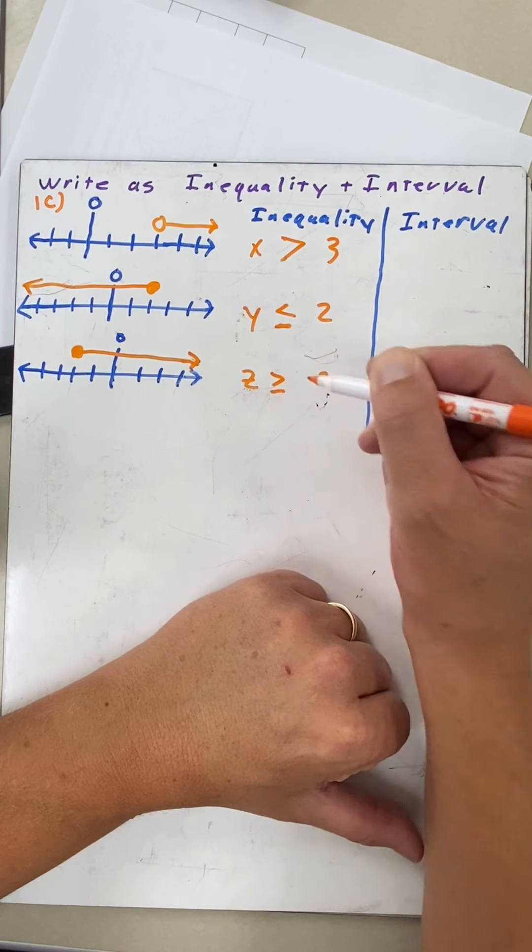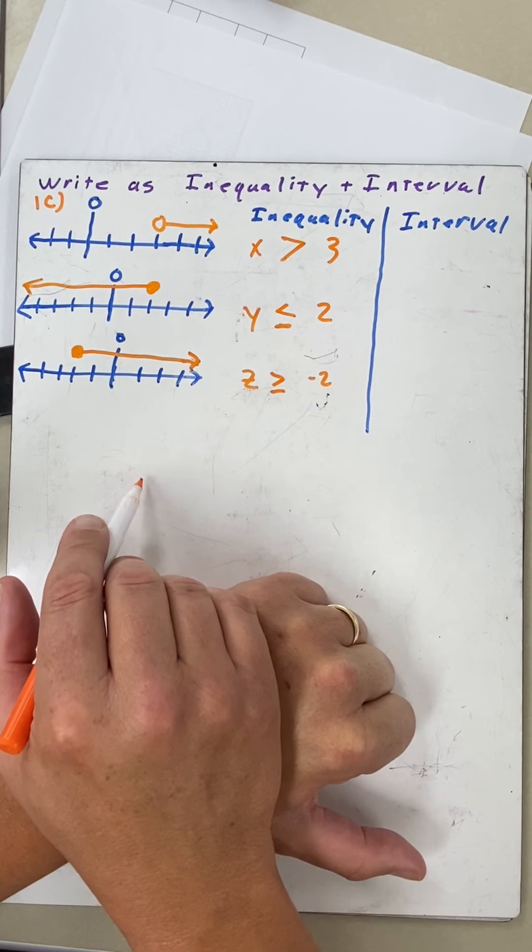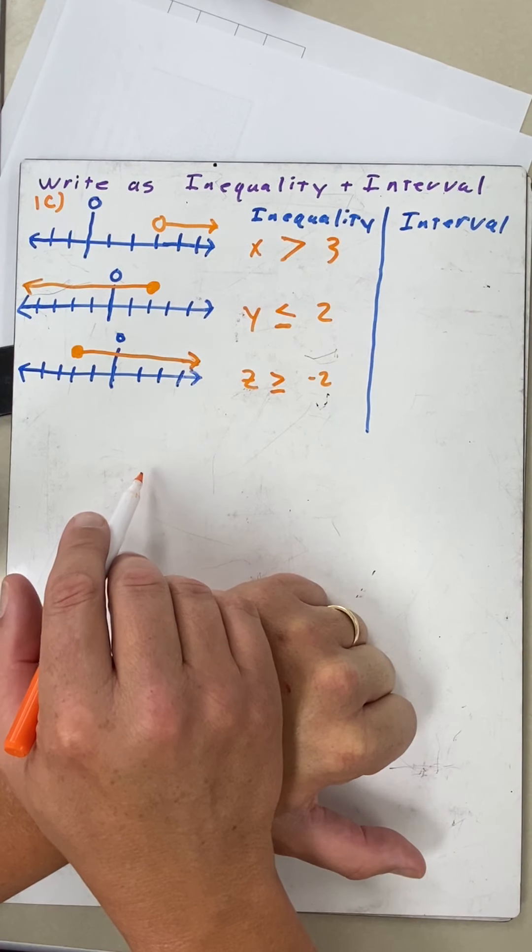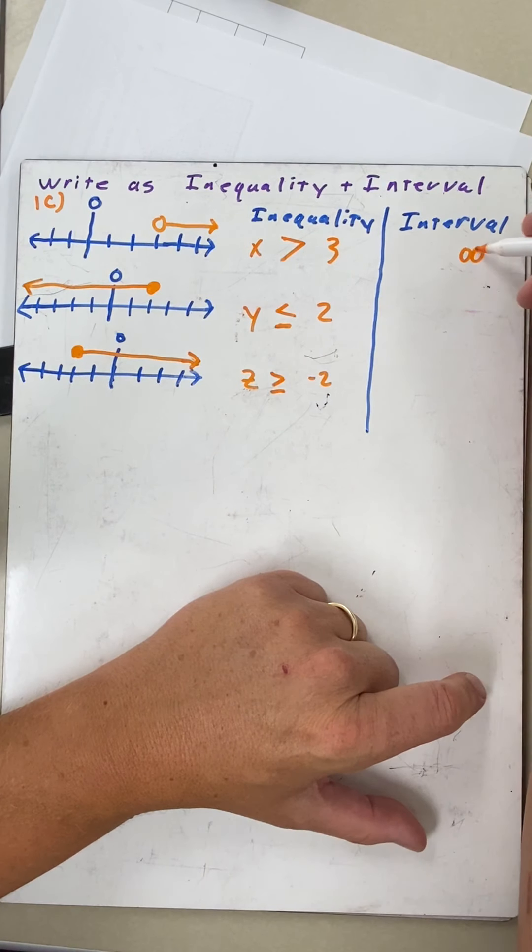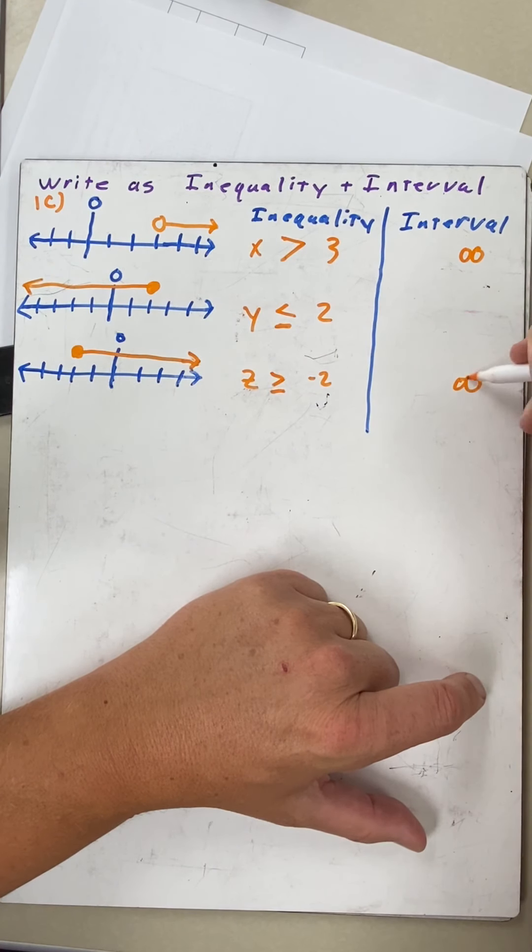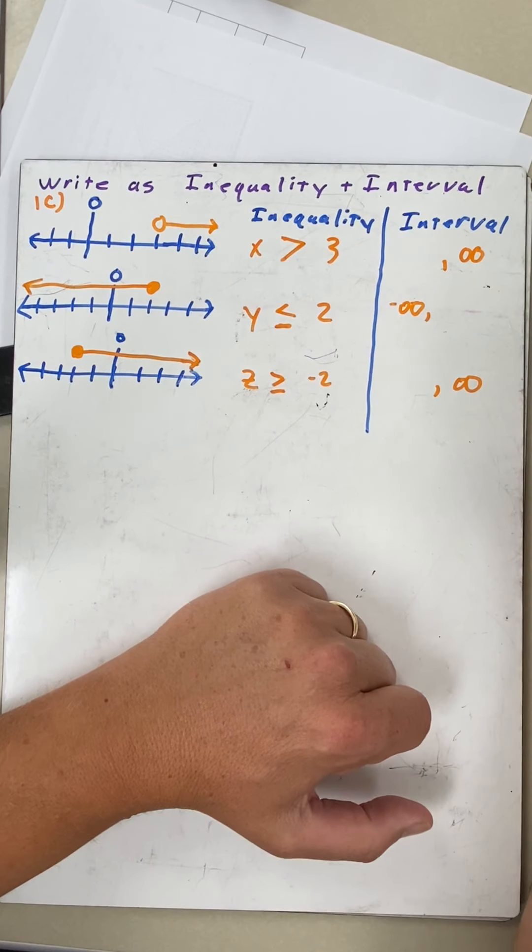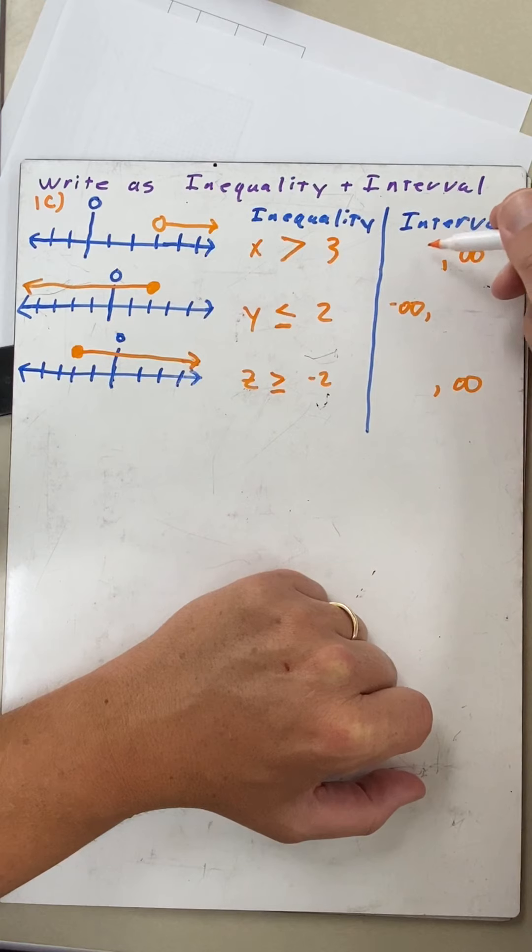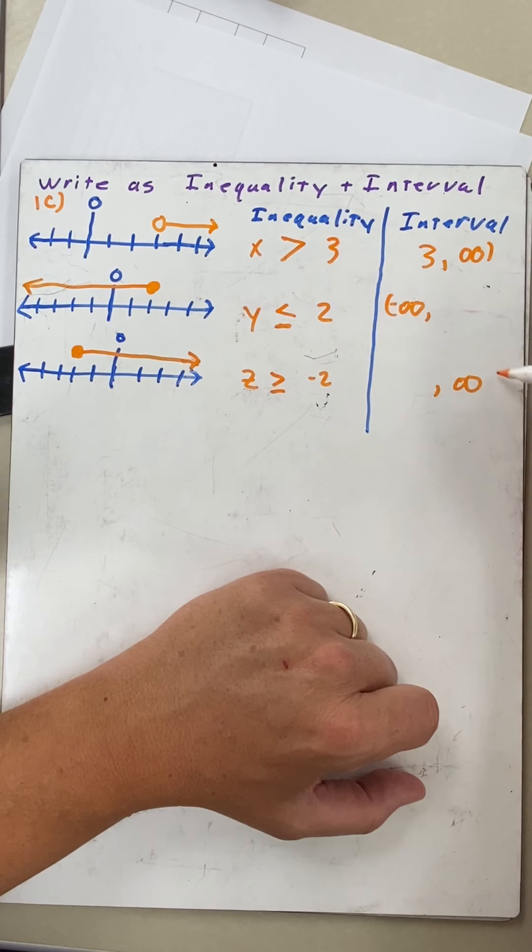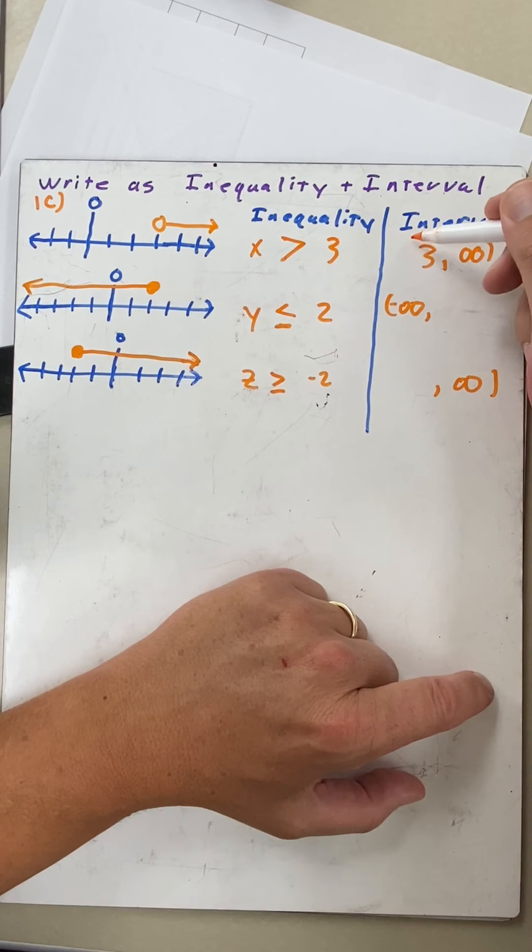Intervals. On these two I have positive infinity, so they have to be the term on the right side. This one I have an infinity on the left, and I have to put a negative in front of it, so we got that on the left side. This one is a positive three. Remember, all the infinities we put parentheses. Open circle is parentheses.